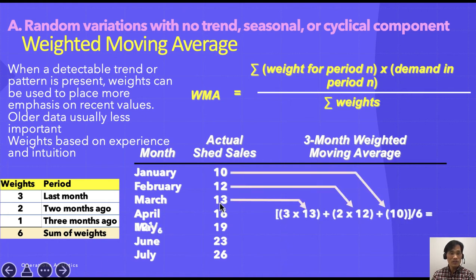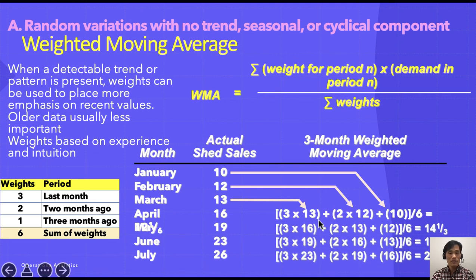Three times 13 because we give the weight of three to the previous data, plus two times twelve, plus one times ten. That is your numerator, divided by the total number of weights which is six. This gives you the weighted moving average. In the same way, you apply that weight to the next month and following months. Right now you use three months weighted moving average, but you could increase